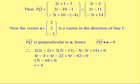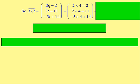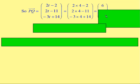So 17T = 68, which means T = 4. Now that we know the value of T, we can express vector PQ as numbers by substituting T = 4: (2(4) − 2, 2(4) − 11, −3(4) + 14) = (6, −3, 2).